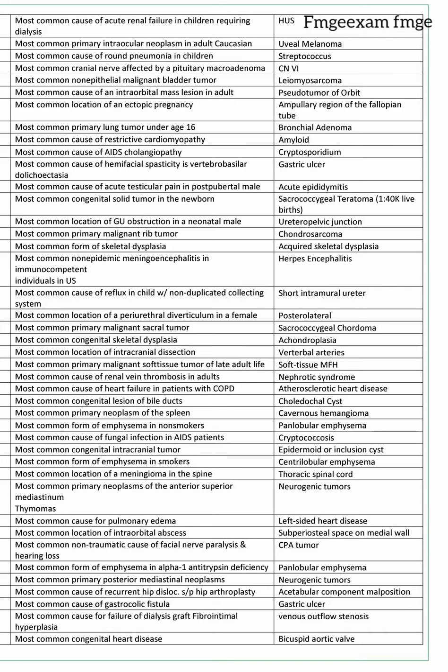Most common primary malignant rib tumor is chondrosarcoma. Most common form of skeletal dysplasia is achondroplasia. Most common non-epidemic meningoencephalitis in immunocompetent individual in the US is herpes encephalitis.